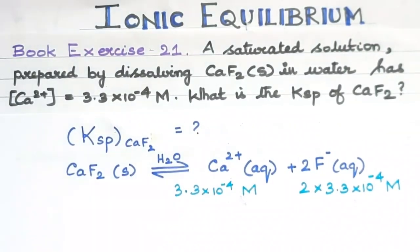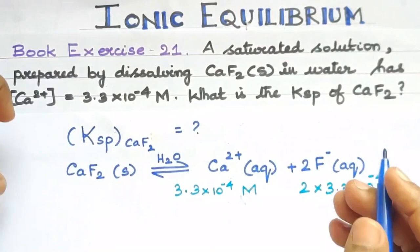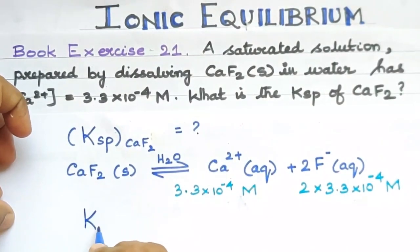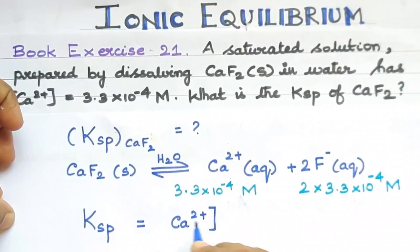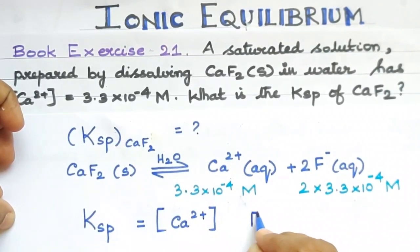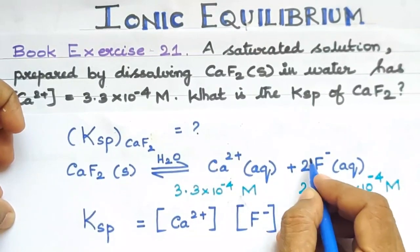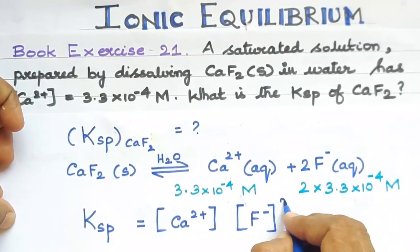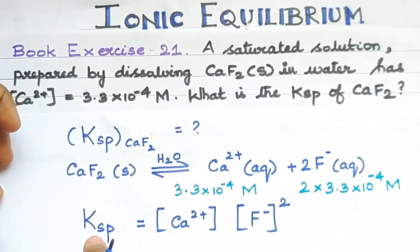Now we write the Ksp expression for calcium fluoride. The Ksp expression is: Ksp = [Ca²⁺][F⁻]². The stoichiometric coefficient becomes the power in the expression. This gives us the solubility product Ksp.